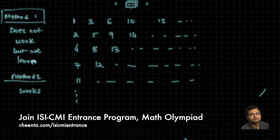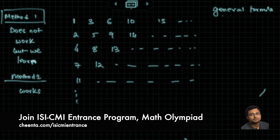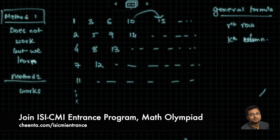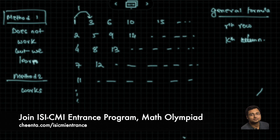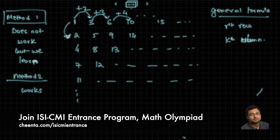What we will do is find a general formula for an element in the rth row and kth column. Notice that the gaps are increasing each time — from 1 to 3, the gap is +2; from 3 to 6, it's +3; from 6 to 10, it's +4, and so on. Going column-wise: 1 to 2 is +1, 2 to 4 is +2, 4 to 7 is +3, 7 to 11 is +4, and so on.